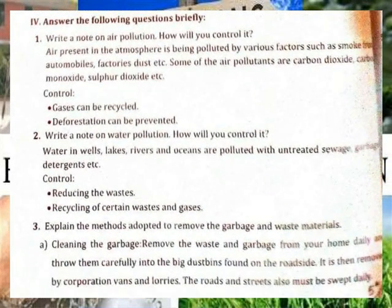Detail answer — Air pollution: How will you control it? Air present in the atmosphere is being polluted by various factories, smoke from automobiles, factories, dust, etc. Some of the air pollutants are carbon dioxide, carbon monoxide, sulfur dioxide, etc.